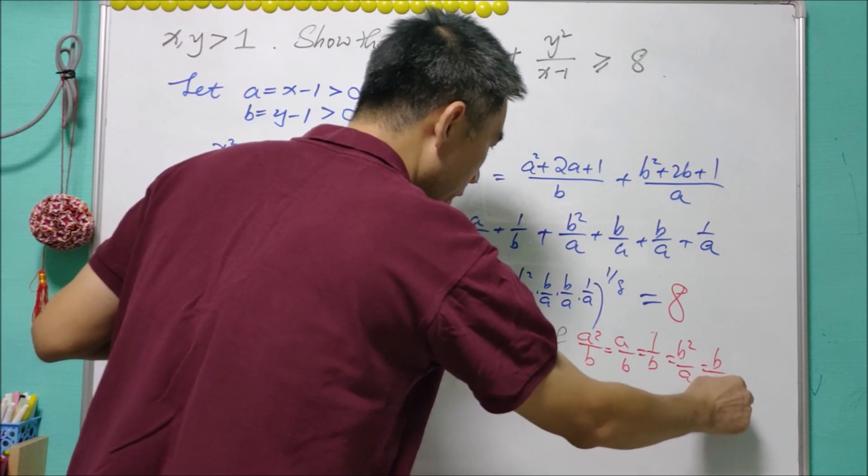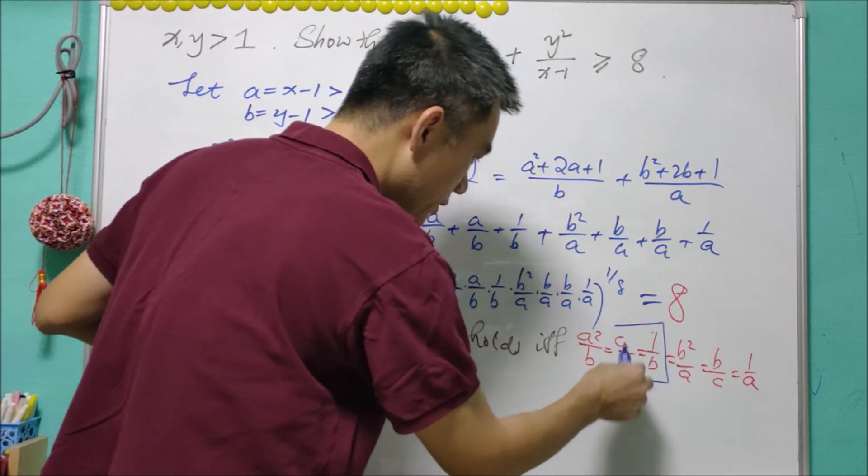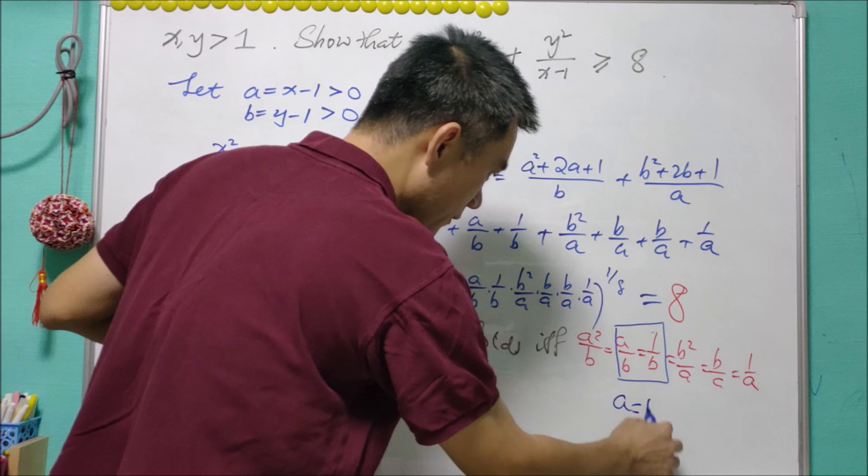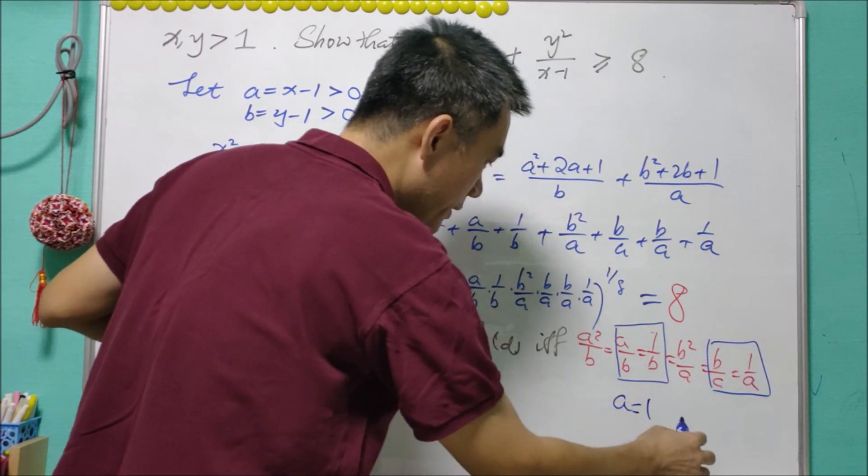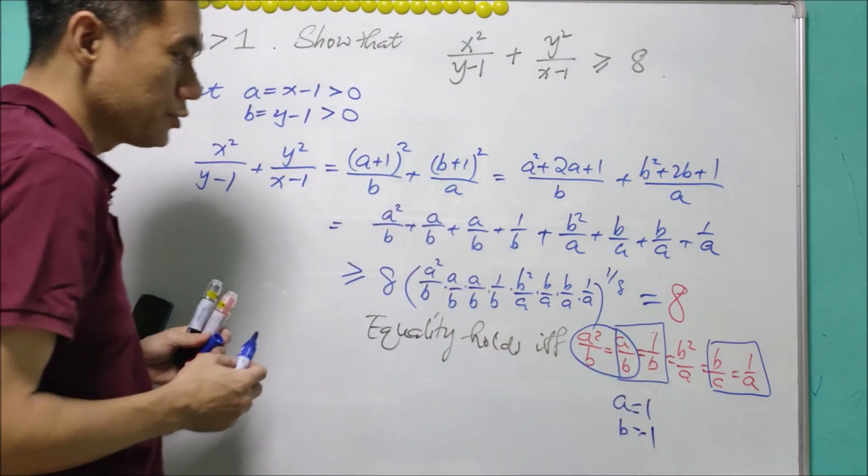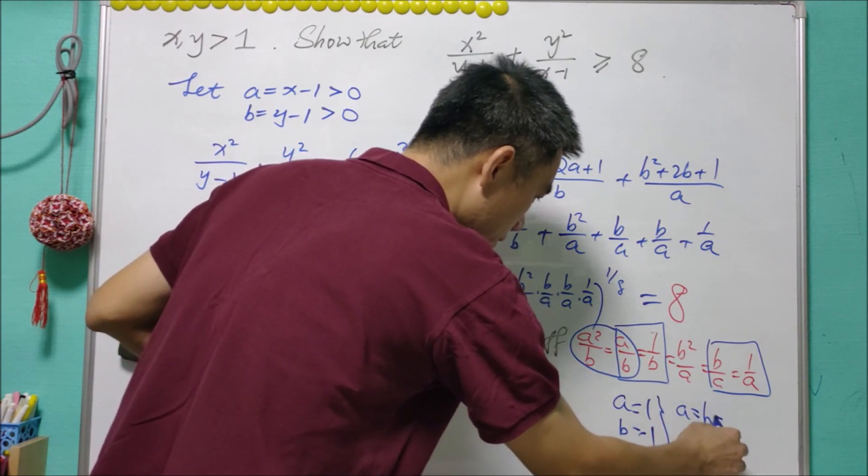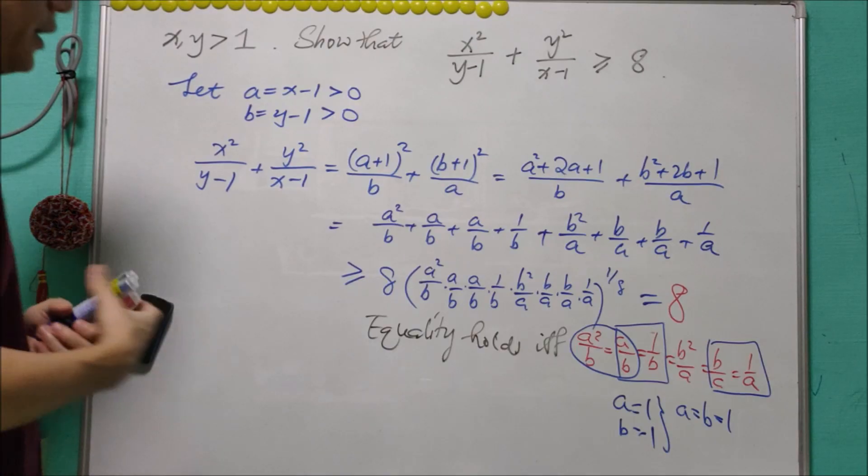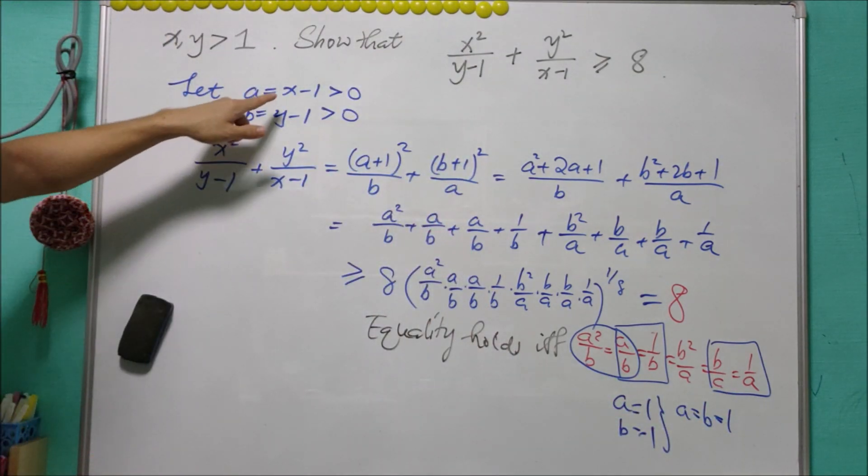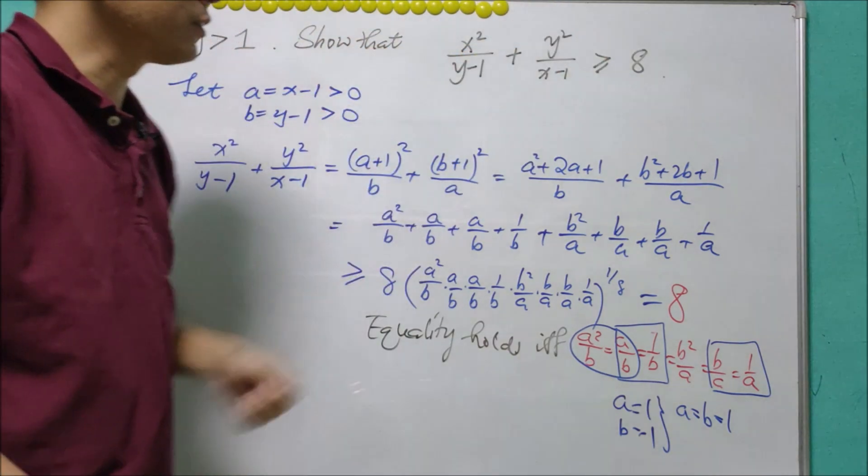From here we know that a equals 1. From here we know that b equals 1. And from here we know that a is equal to b. And therefore we have a equals b equals 1. And we can check that if a equals b equals 1, then X will equal Y and equals 2, and we have the equality holds.